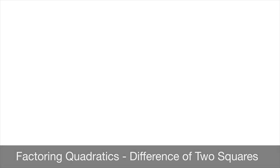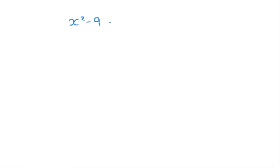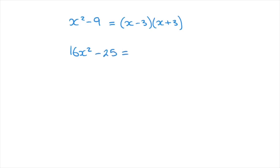We now learn how to factorize quadratics using the difference of two squares. By the end of this tutorial we should know how to show that x squared minus 9 equals x minus 3 times x plus 3, or that 16x squared minus 25 can be written in factored form as 4x minus 5 times 4x plus 5. The idea is to write the quadratics on the left hand side of each equation in their factored form.